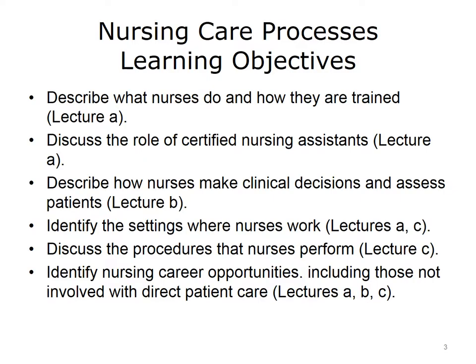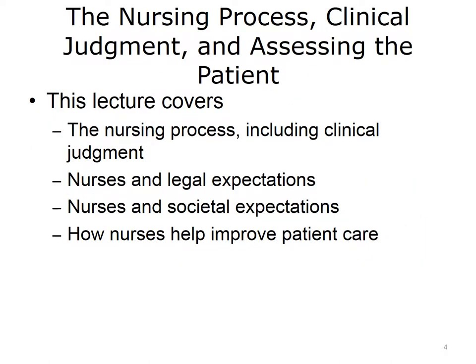By the end of this unit, Nursing Care Processes, students will be able to describe what nurses do and how they are trained, discuss the role of certified nursing assistants, describe how nurses make clinical decisions and assess patients, identify the settings where nurses work, discuss the procedures that nurses perform, and identify nursing career opportunities, including those not involved with direct patient care. This lecture discusses the nursing process, including how nurses use clinical judgment and assess the patient, and also how nurses meet legal and societal expectations and the roles that nurses can play in improving patient care.